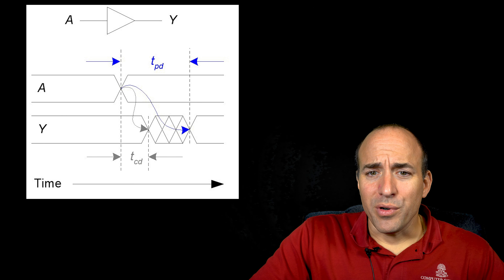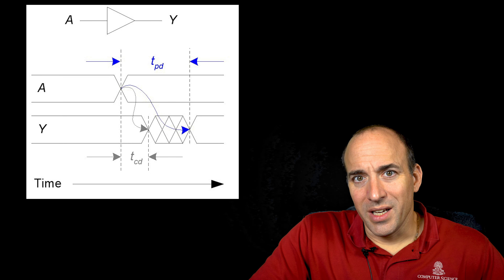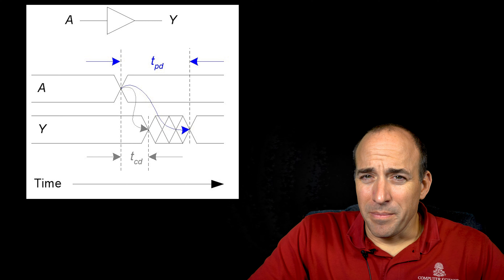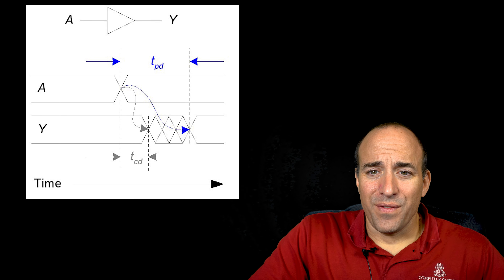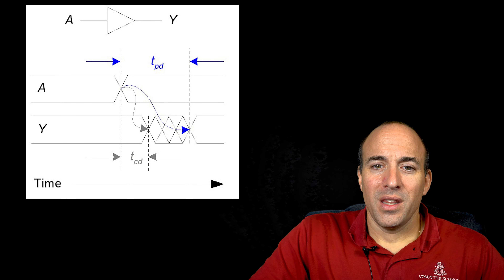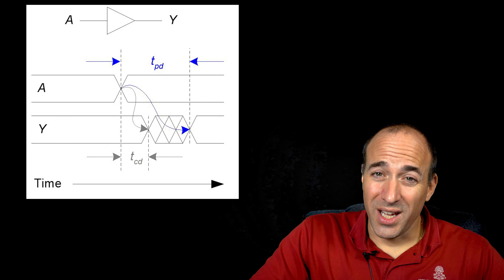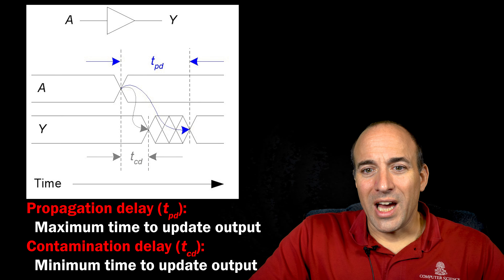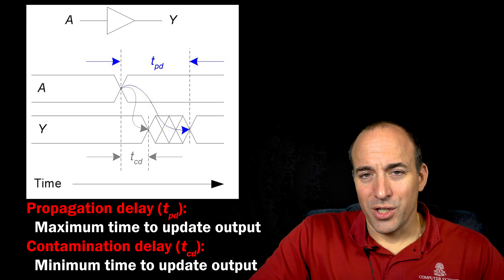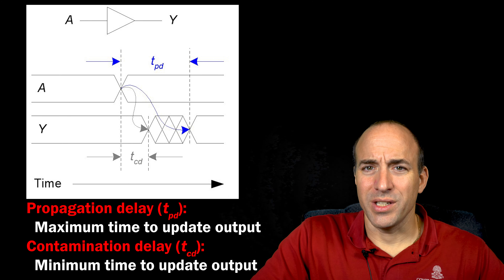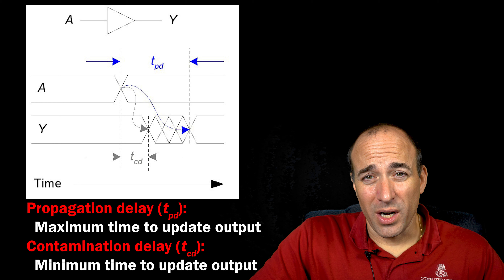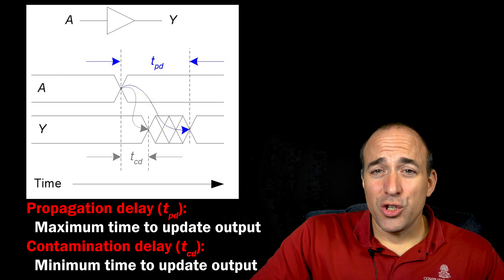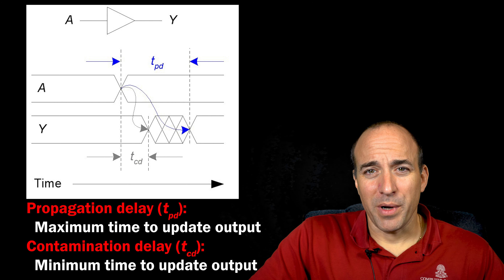Some changes to the gate's input don't cause a change to its output, depending on the logical function being performed. But if we know the maximum amount of time it would take if a change in the output does occur from a change in the input, then we know how long we would need to wait for any change that might potentially occur. This is called the propagation delay, or T-PD, which is the maximum delay between when an input changes to the final change in the corresponding output.